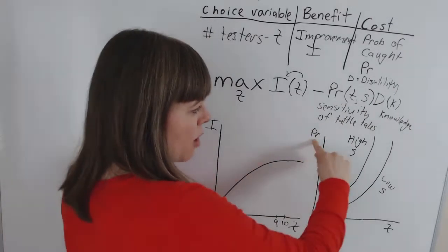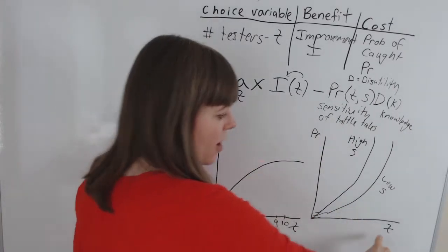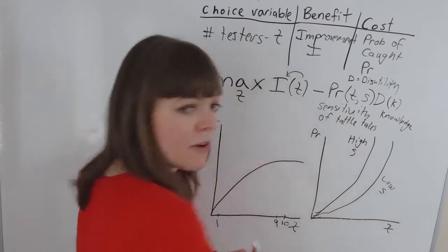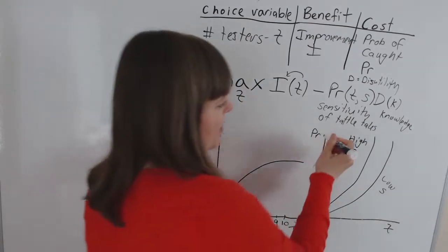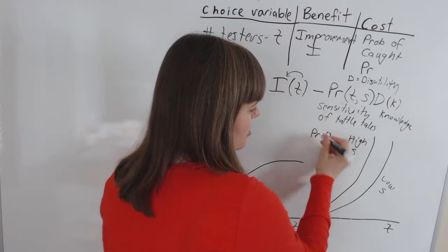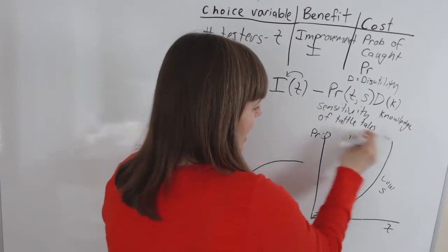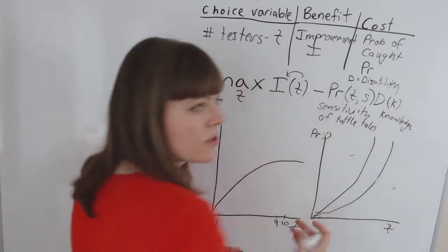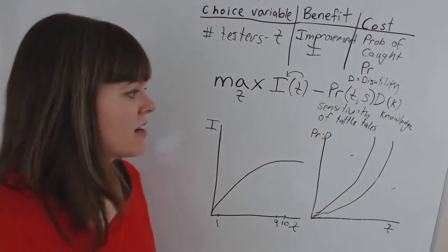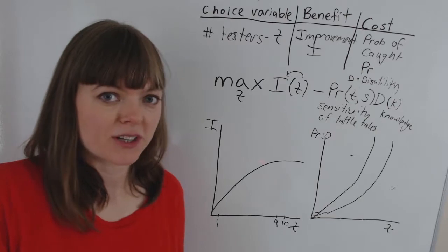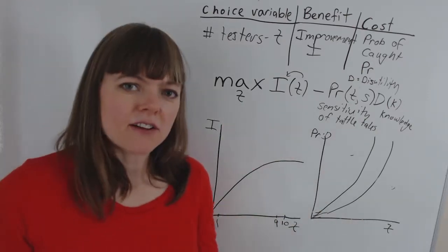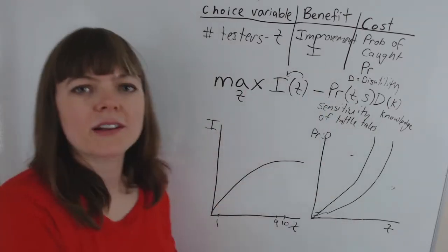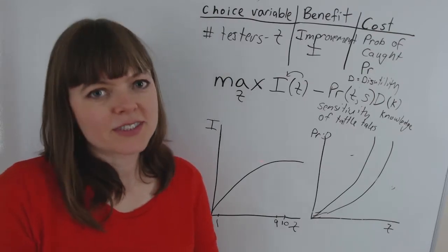And right now, we've only graphed probability of being caught against the number of testers we've got, we could make this probability times disutility. And if we did that, we'd also get a rotation up as Umbridge's knowledge about what's a good punishment goes up over the course of the books. So that's just one model that models the whole modeling process with all of its classic parts.